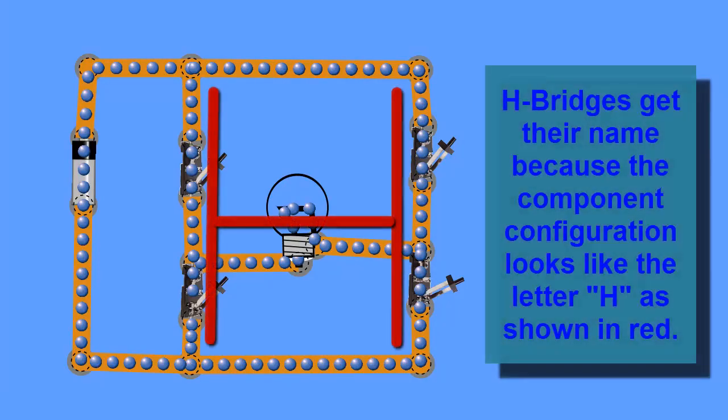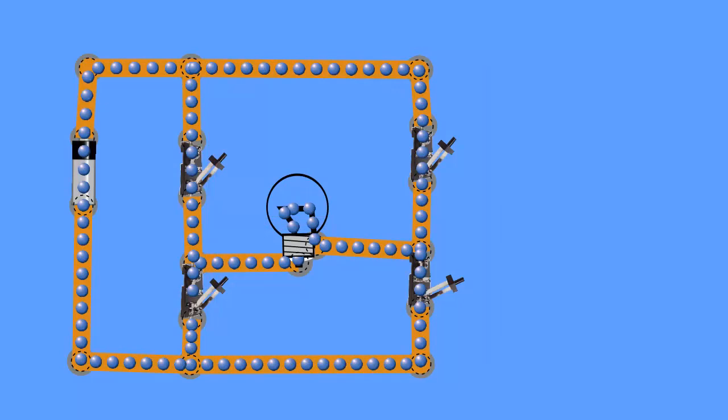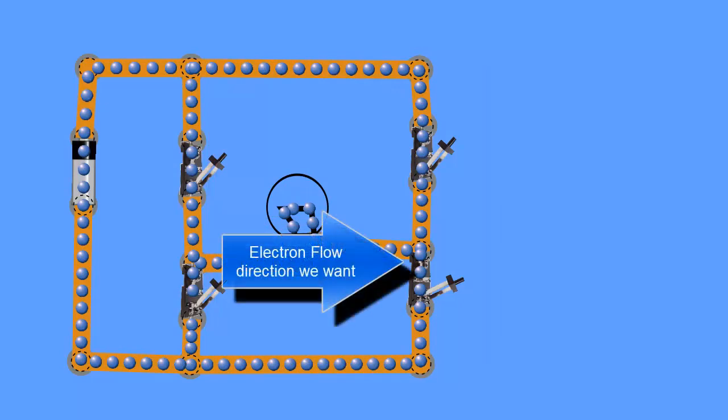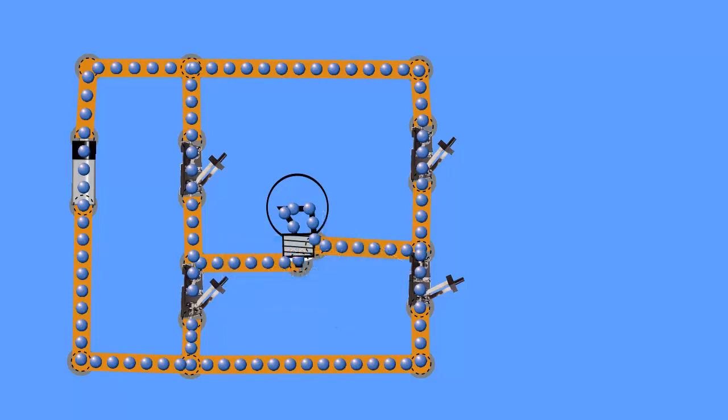So what I want to do first is let's line up the switches so that we get current flow through the load from left to right. And we're talking about electron flow in this particular case. The negative terminal of the battery is on the bottom.